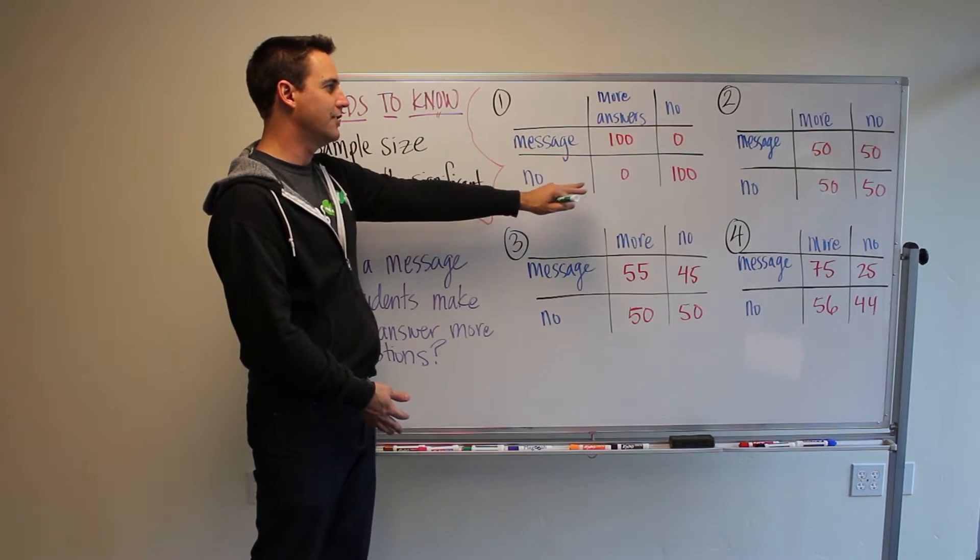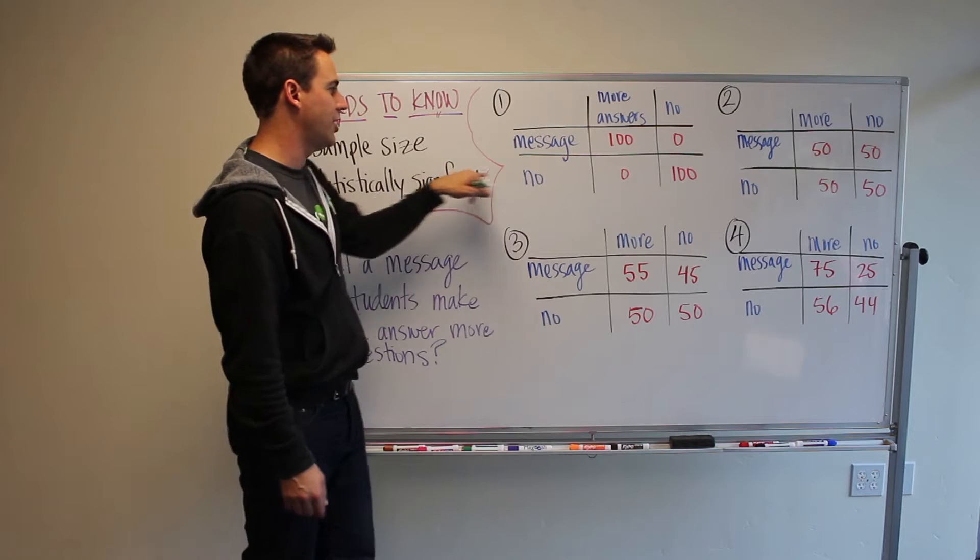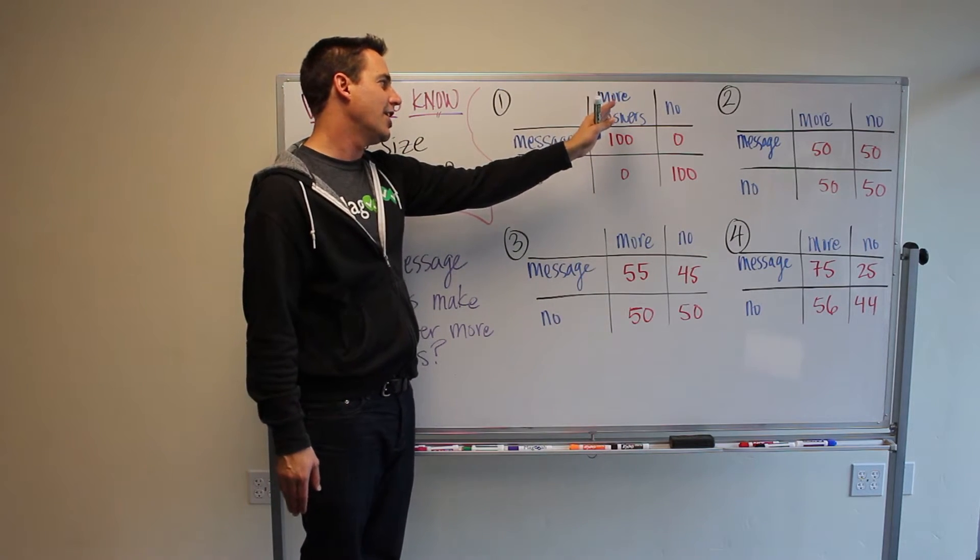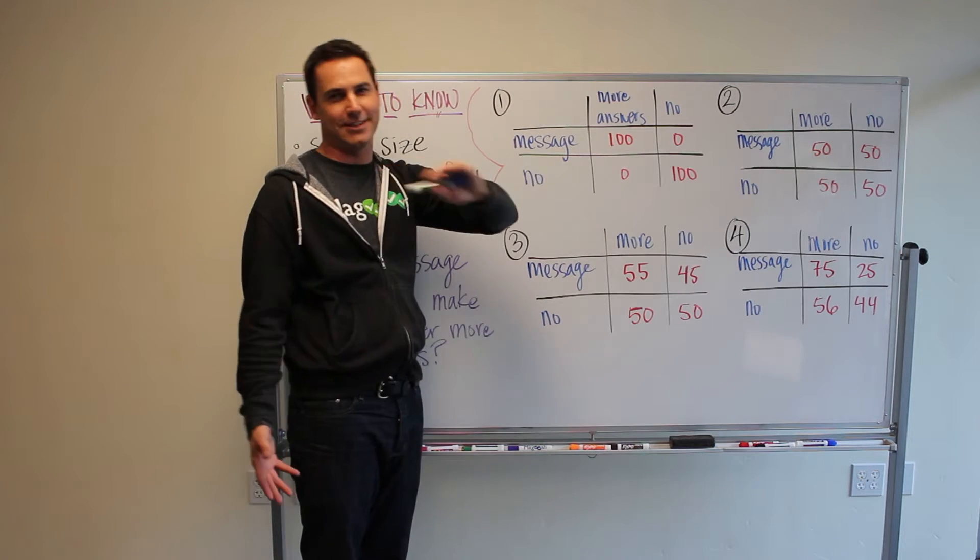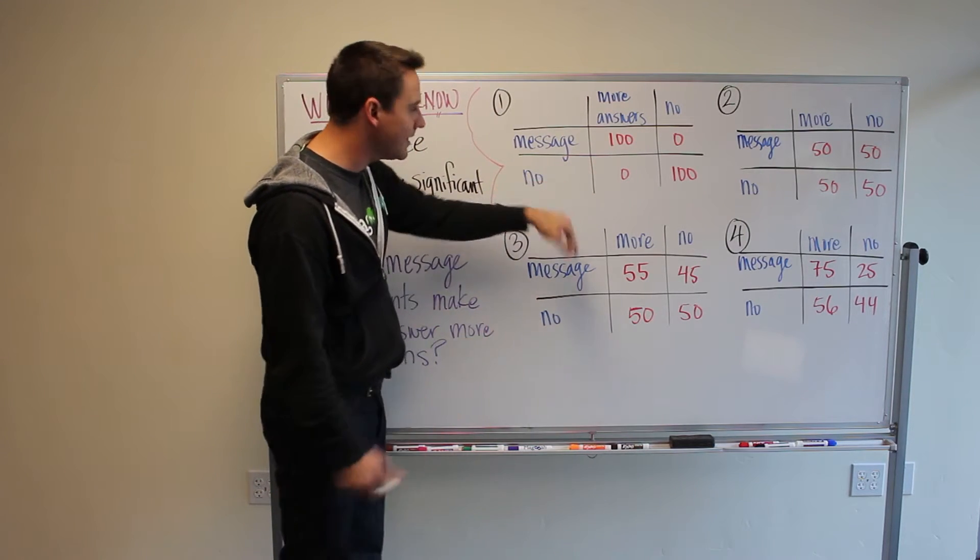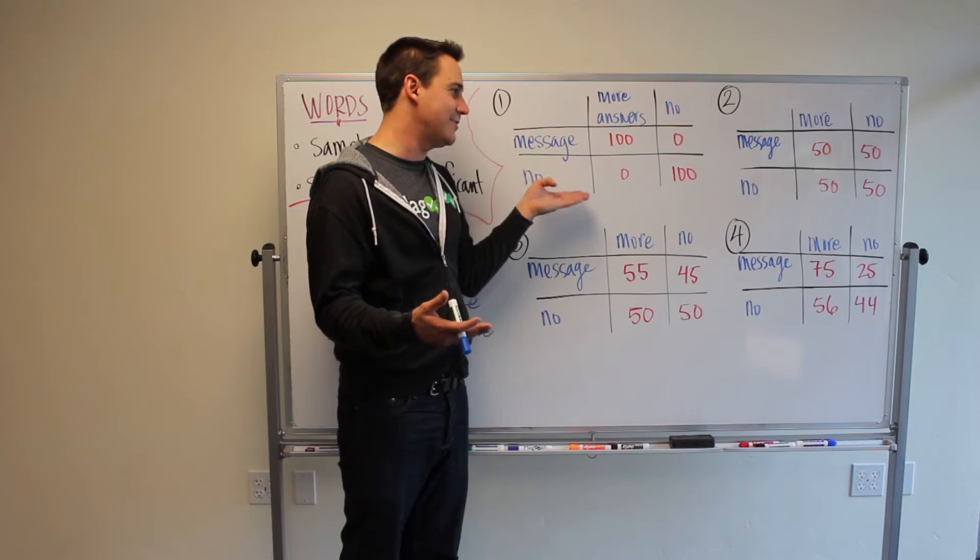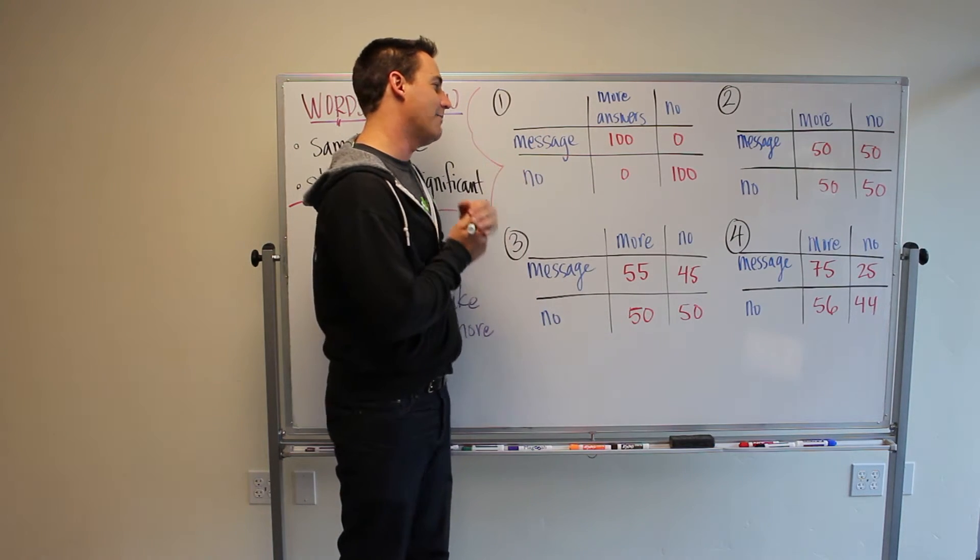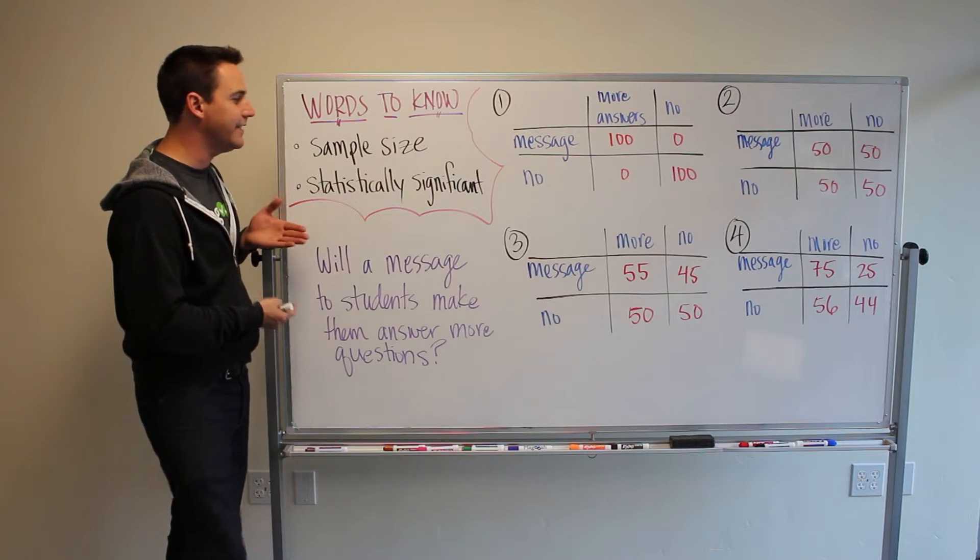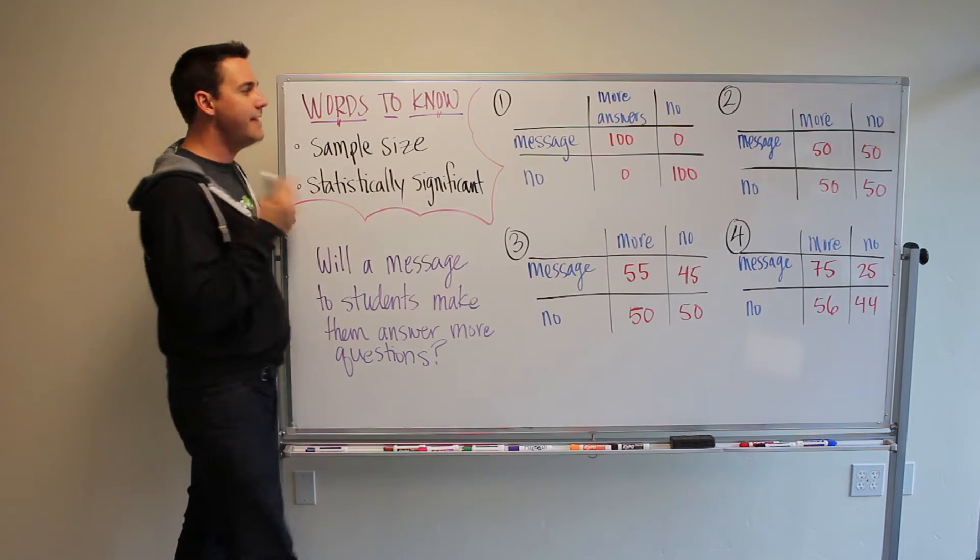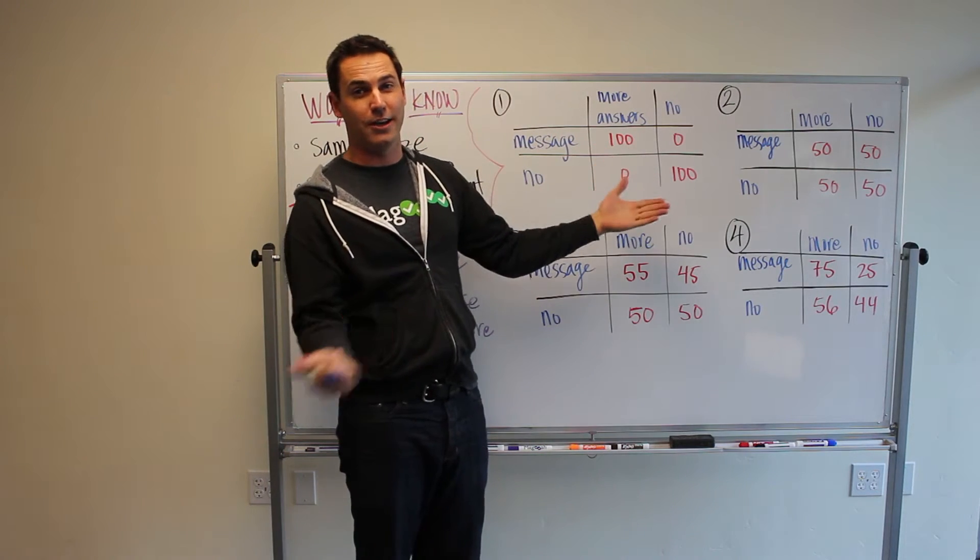So in this first example, let's say we had a group of 200. Like I said, there's 100 people who get the message and 100 people who don't get the message. And then we look at the results and we see of the 100 people who got the message, 100 answered more questions and no one answered less questions or no more questions. And then if you didn't get the message, you didn't answer more questions. This is absurd and ridiculous. Nothing that you test really ever ends up like this. And it's not interesting because it's not ambiguous. The whole point of something being statistically significant is that there's a little bit of ambiguity. It's not exactly clear, but here it's clear. The message helped. But again, this is not very representative of how things actually work in the real world.